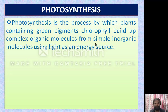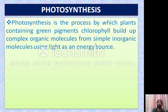Actually photosynthesis is a process in which plants contain green color pigments called chlorophyll. In the previous class, we discussed that the chloroplast is an important cell organelle to perform the photosynthesis process in plants. These green color pigments, chlorophylls, build complex organic molecules from simple inorganic molecules, using light as an energy source.